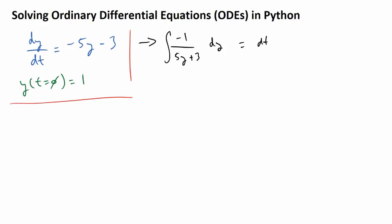Now I'm going to integrate both sides of this equation, and when we do that what we're going to find is that we have minus 1/5 times ln — or natural log — of (5y + 3), and this will be equivalent to t plus some constant I'm going to call c1.